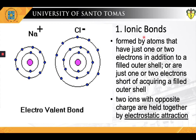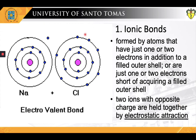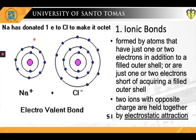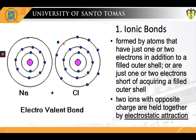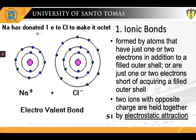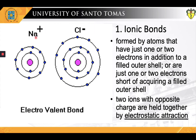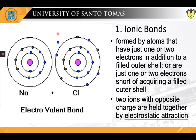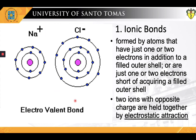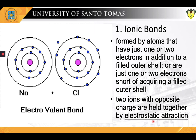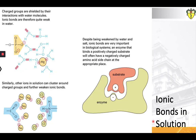The first of the non-covalent interactions are ionic bonds. Ionic bonds are most likely to be formed by atoms that have just one or two electrons in addition to a filled outer shell, or are just one or two electrons short of acquiring a filled outer shell. As animated here, an electron is transferred from a sodium atom — which has a lone electron in its outermost shell — to the outermost shell of chlorine, which is lacking one electron. The sodium atom loses an electron and becomes a positively charged sodium cation; chlorine gains an electron and becomes a negatively charged chloride anion. Because of their opposite charges, sodium cation and chloride anion are attracted to each other and held together by electrostatic forces — hence ionic bonds are also known as electrostatic bonds.